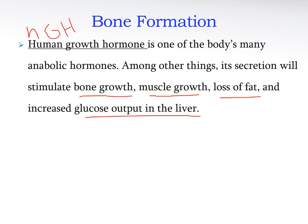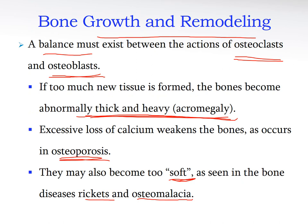Human growth hormone is produced in everyone — not just children — even when we're no longer growing, though its effect on bones stops. It still has metabolic effects. Growth and remodeling happen through the balance of osteoblast and osteoclast activity. Osteoblasts produce bone and osteoclasts remodel it — there must be a balance at all times to maintain bone shape.